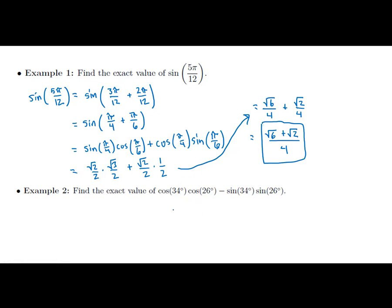We can also go in the opposite direction. If we have an expression with angles that aren't special, maybe their sum or difference is. Looking at an expression with a minus in the middle and the pattern cosine, cosine, sine, sine, that suggests the cosine addition formula — and cosine with a minus means it's actually the sum of the angles. When those angles add to 60 degrees, the cosine of 60 degrees is one half.